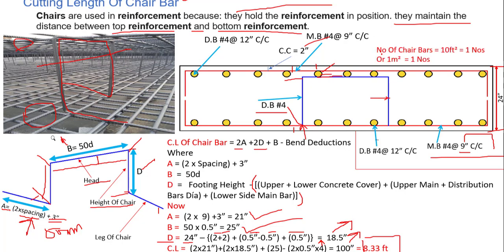One more important point: the number of chair bars required for 10 square feet is 1. So if you have 100 square feet, divide by 10 to get 10 chair bars. In metric, 1 chair bar is needed per 1 square meter. This is how we find the number of chair bars and the cut length of a chair bar. Hope you understood — see you in the next session.